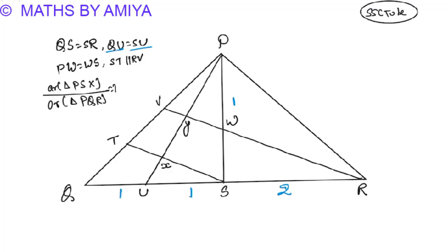PW is equal to WS. This is my ratio term. Now we have to call it ST parallel to RV. ST and RV parallel here. Then we will see this question first before solving it. We will know what concept I will use.